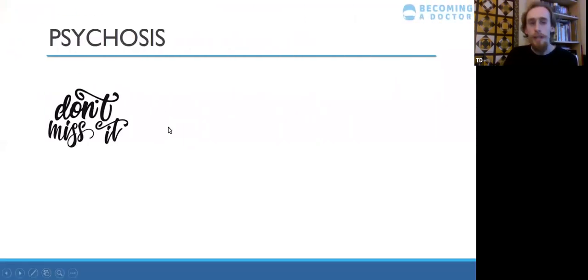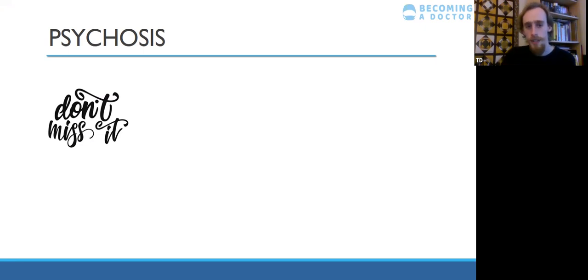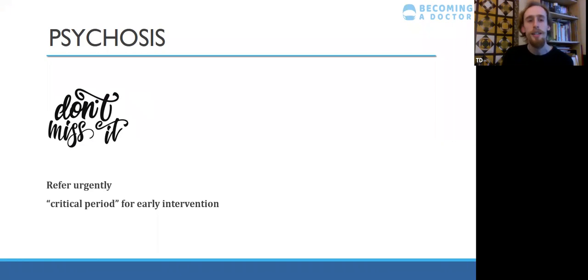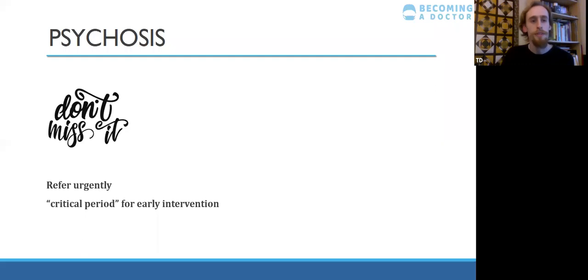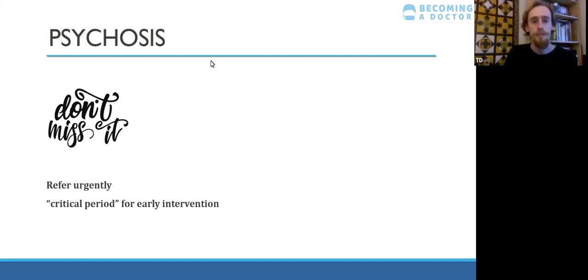Psychosis — we did that last time. Basically just don't miss it. If you're a GP and someone comes in with things that look like the prodrome of psychosis — weird experiences, becoming very socially withdrawn, saying strange things, or family feel they're not themselves — make sure you refer within days to a crisis team or early intervention psychosis team. There is a critical period for early intervention. The earlier you start medication and psychological support, the more dramatically you can change the course of that illness. If it grumbles on for weeks or months, it becomes a lot harder to treat.